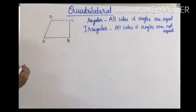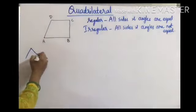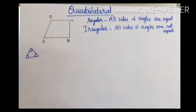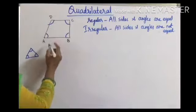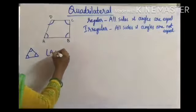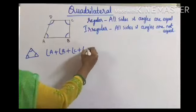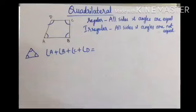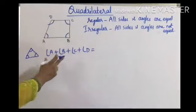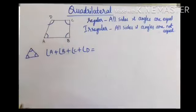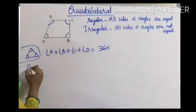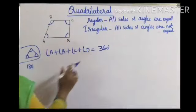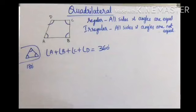What about the angles? In a triangle the sum of interior angles is 180 degrees. Then what about a quadrilateral? In a quadrilateral we have four angles — angle A, angle B, angle C, angle D. The sum of all the interior angles of a quadrilateral is 360 degrees.